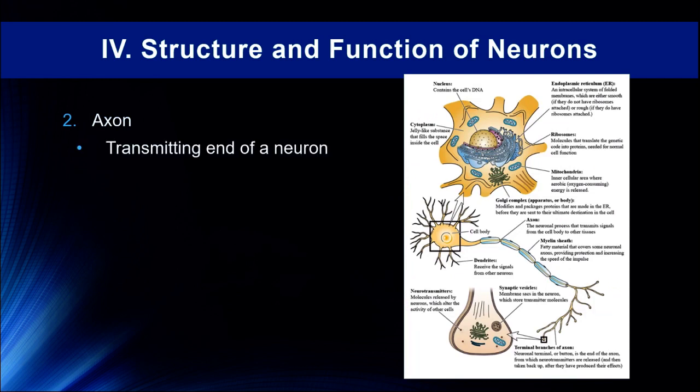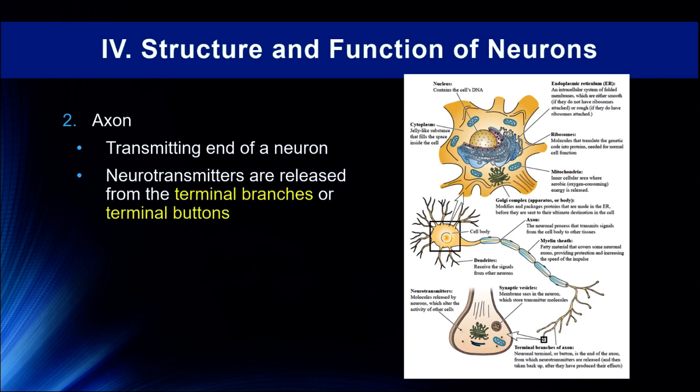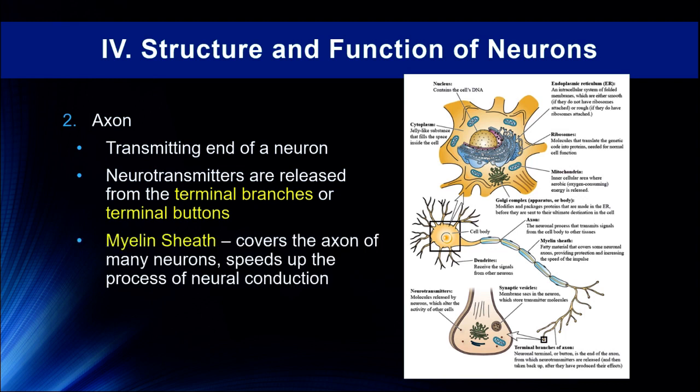There is usually a single axon — this is the transmitting end of a neuron. Neurotransmitters are released from the terminal branches or terminal buttons into the synapse, and this is the point at which a number of drugs have their effects. At those terminal buttons are autoreceptors, which shut down neurotransmission by stopping neurotransmitter release. There are also transport proteins that bring neurotransmitters back into the presynaptic cell, which are very important for understanding how certain drugs work. Most white matter neurons are covered with a myelin sheath, which speeds up neural conduction; gray matter neurons are unmyelinated, and gray matter often refers to cell bodies.